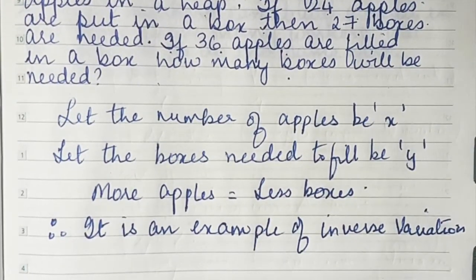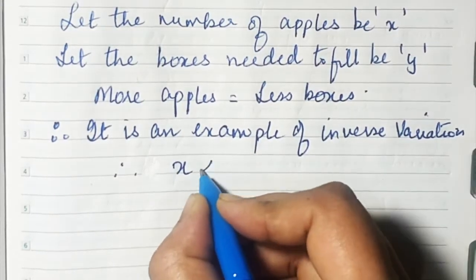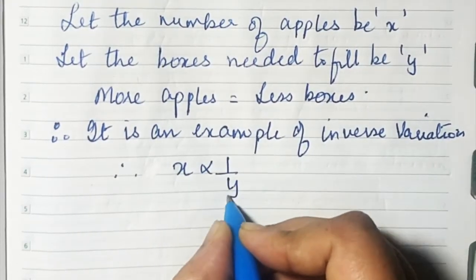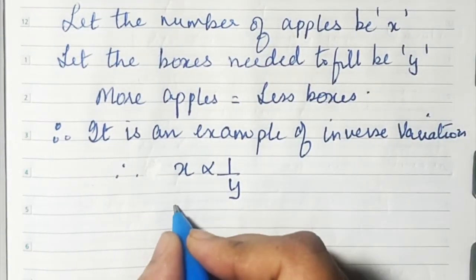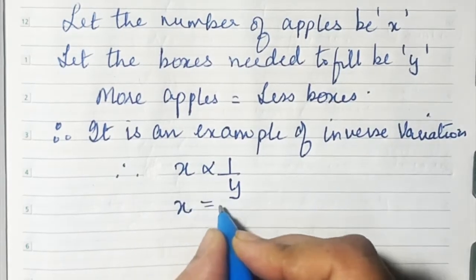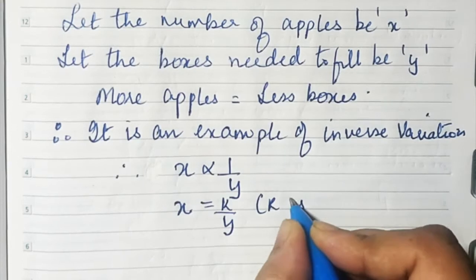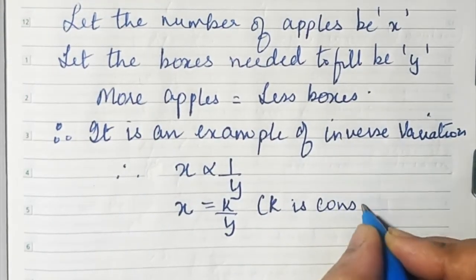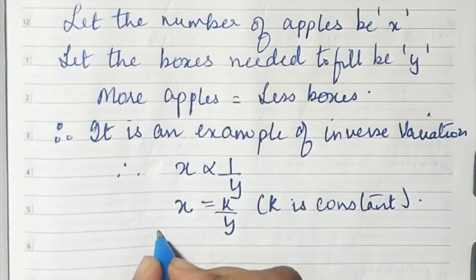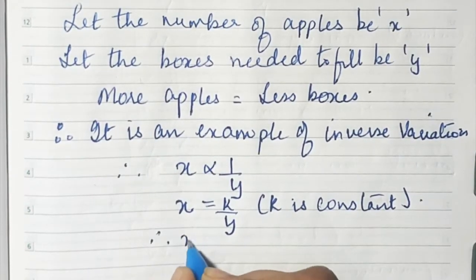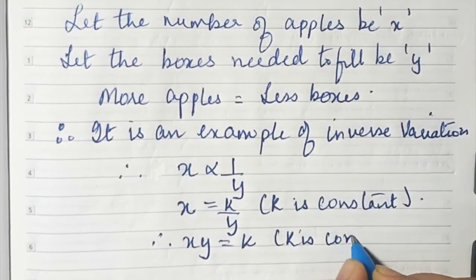It's an inverse variation. How do we write it? x is inversely proportional to y — apples are inversely proportional to the number of boxes. So x is equal to k upon y, where k is a constant. Therefore, x times y equals k.